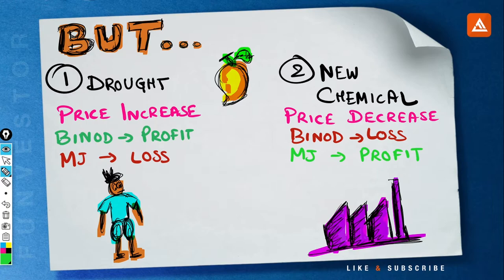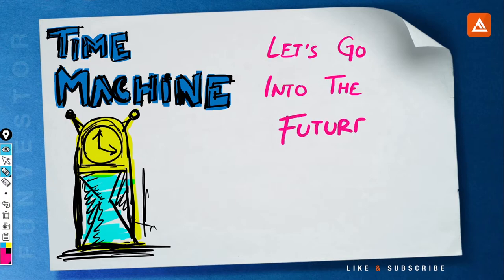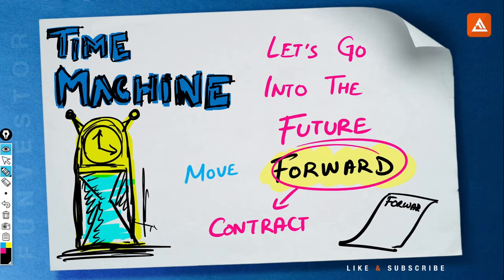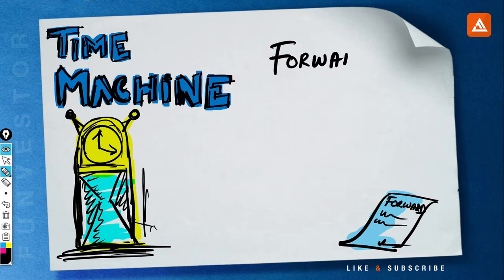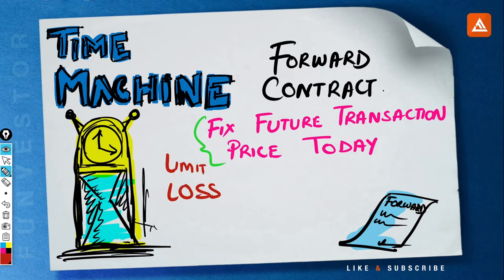Now both the parties don't want to suffer loss. So they use a time machine to go into the future and make a deal. This time machine is called a forwards contract — like move forward in time. As per this contract, both parties agree to a price at which Binod will sell the mangoes while MJ Limited will buy them exactly after six months from now.